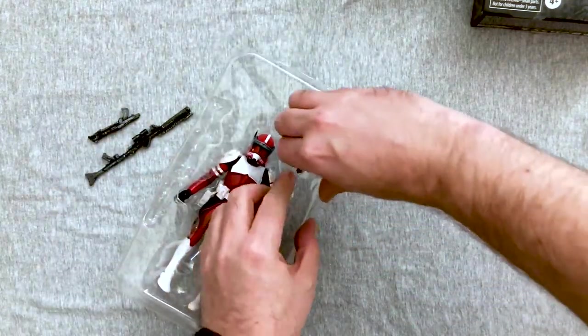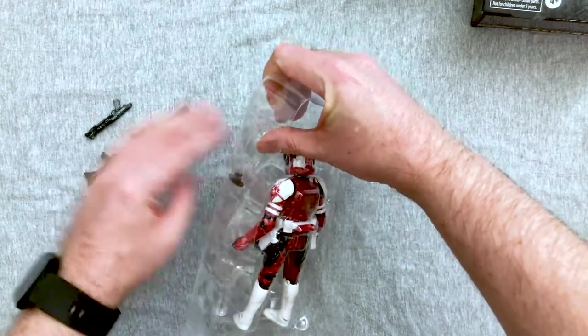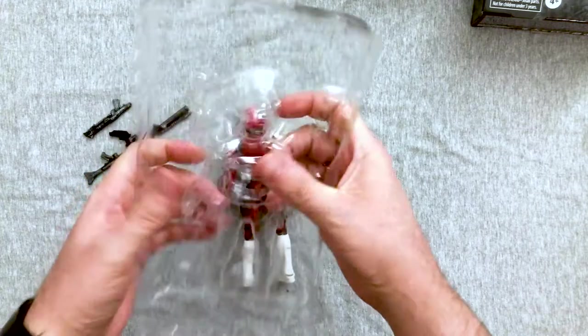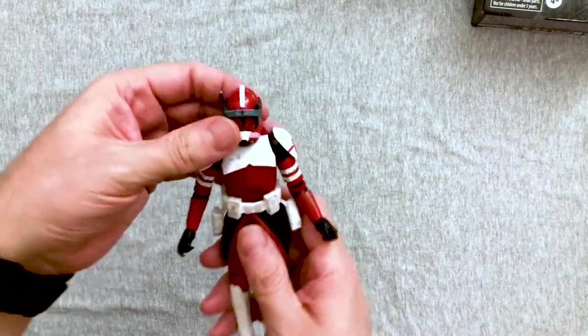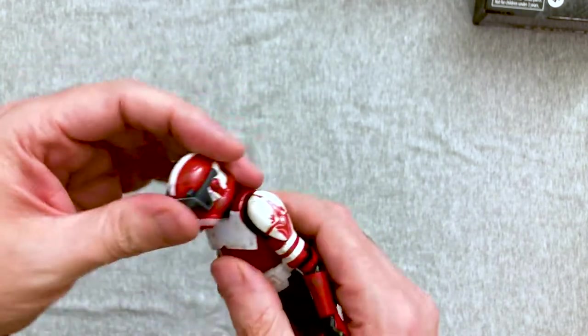It's probably going to be the same piece of paperwork you get in these other figures. That's something they're doing in the newer ones these days. Nothing else in the box there. And he comes with a few extra accessories, because he does have that arc trooper kind of vibe going on, being a captain. So he's going to have his little blaster pistols as well. So we'll get all this out of the way.